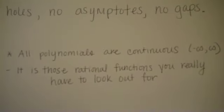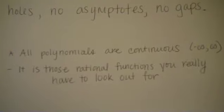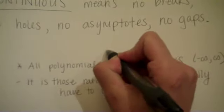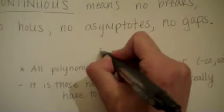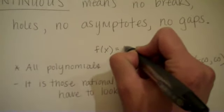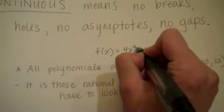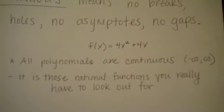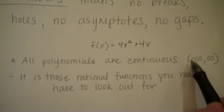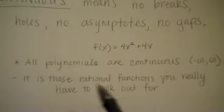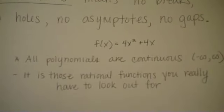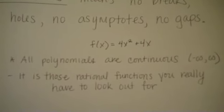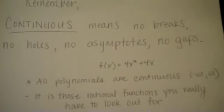If I ever asked you for where is f of x equals x squared plus 4x, or f of x equals 4x squared plus 4x, if I asked you where that is continuous, well, because it's a polynomial, we would just say from negative infinity to infinity. Just be careful of rational functions. You really have to look out for where is that function undefined.